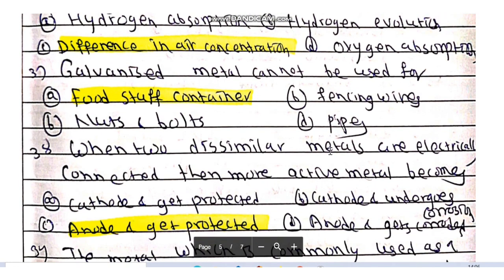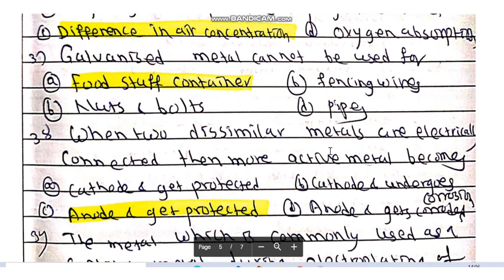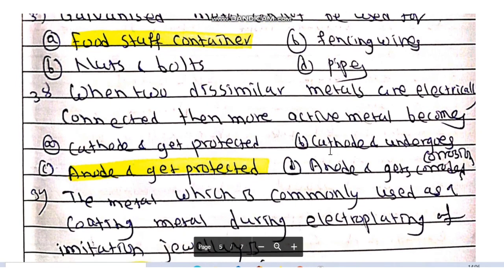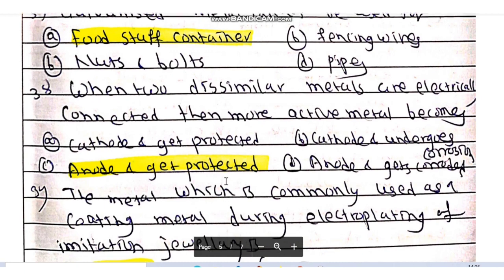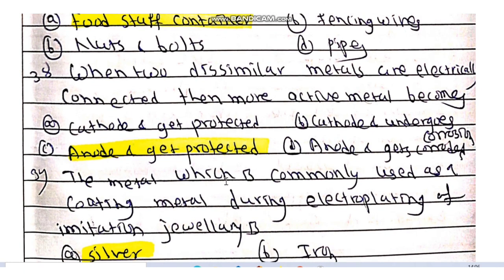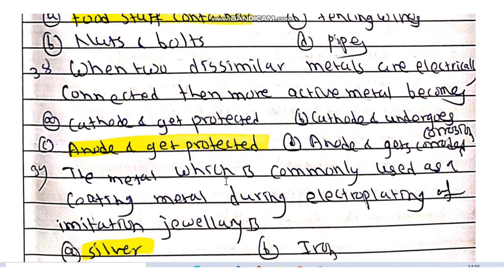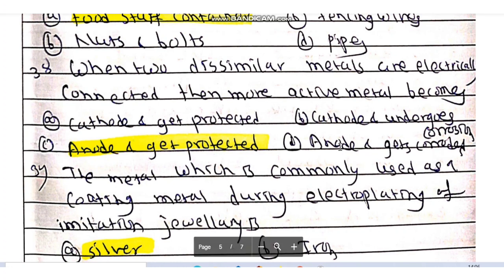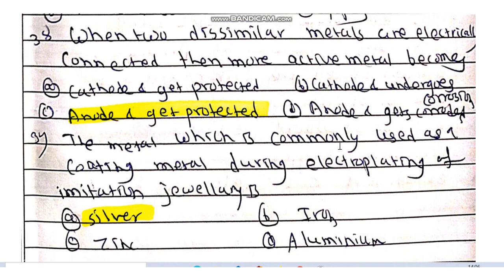Galvanized metal cannot be used for storing foodstuffs. When two dissimilar metals are electrically connected, then more active metal becomes anode and it gets corroded.